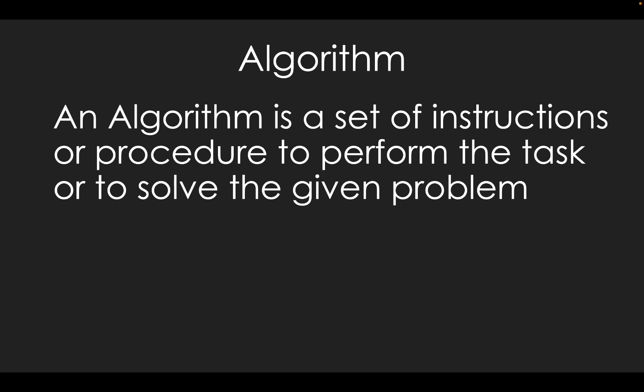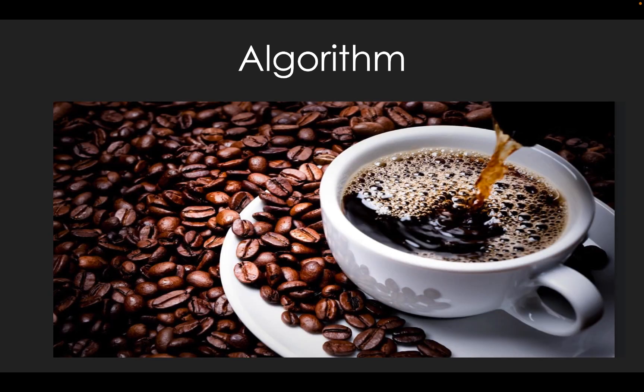The algorithm is a set of instructions and procedures to complete the problem. When you complete a task, you set a procedure. For example, we will make coffee. When you make coffee, there will be a procedure and steps. Only then will we get the final output — which is the coffee we can drink.